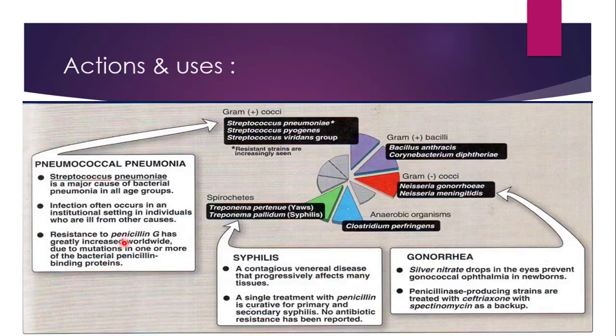Coming towards actions and uses — this is the spectrum of penicillin G. As we have seen in our earlier video on beta-lactam antibiotics, we learned a trick to remember the microorganisms. For gram-negative bacteria, the trick was 'JAMES', and for gram-positive bacteria, the trick was 'SAC'. So the SAC and JAMES mnemonics are going to be used here when we talk about the uses of penicillin G.